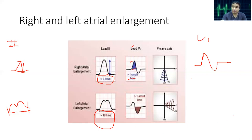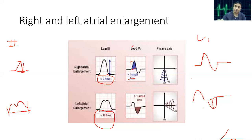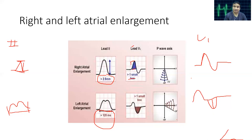Similarly, looking at V1: the positive wave is due to the right atrium and will not change, but there is an increase in amplitude of the negative deflection because it is due to the left atrium. If the amplitude of this negative deflection increases by more than 1 mm, that indicates left atrial enlargement. In right atrial enlargement there is right axis deviation; in left atrial enlargement there is left axis deviation of the P wave axis.